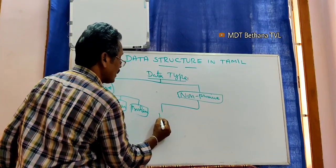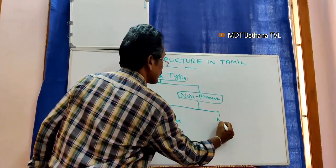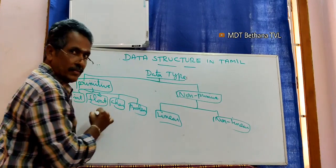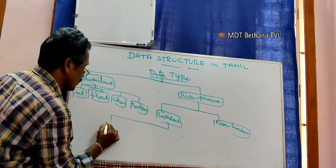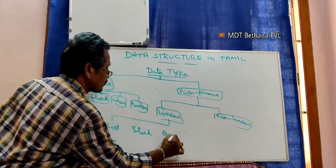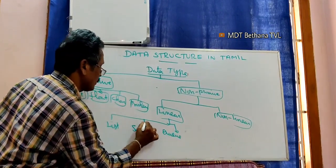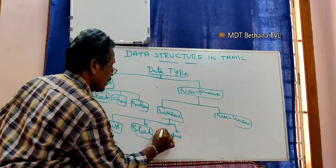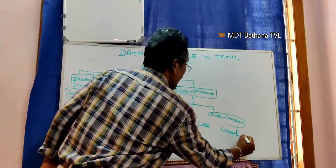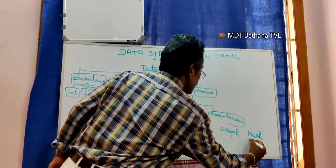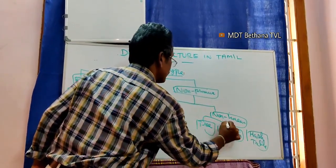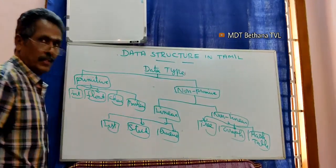Under non-primitive, there are two categories: linear and non-linear. Linear data structures include List, Stack, and Queue. Non-linear data structures include Tree, Graph, and Hashtable.